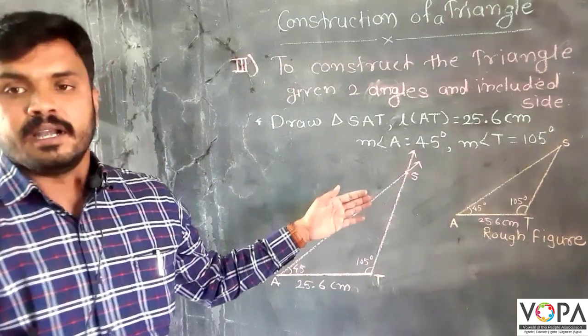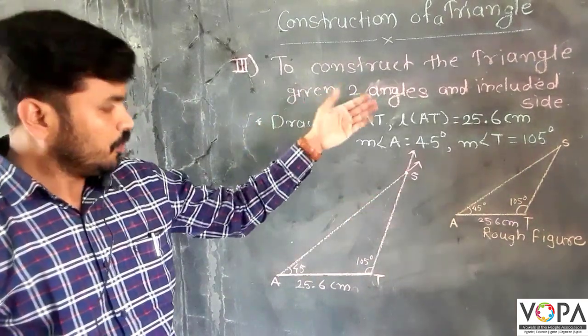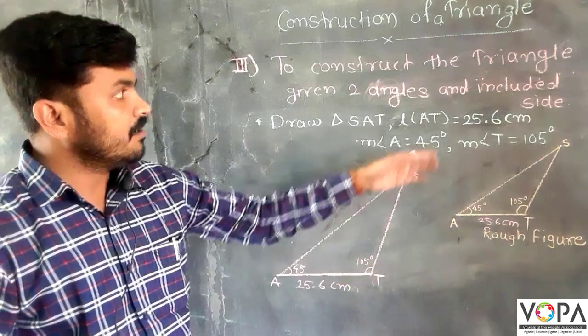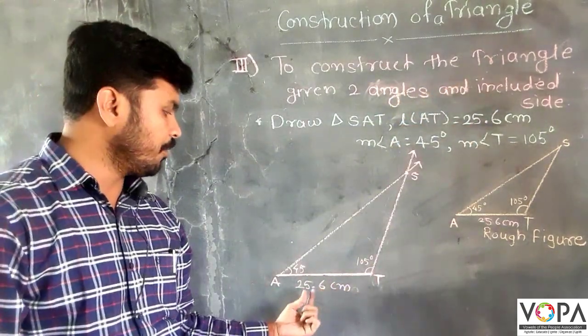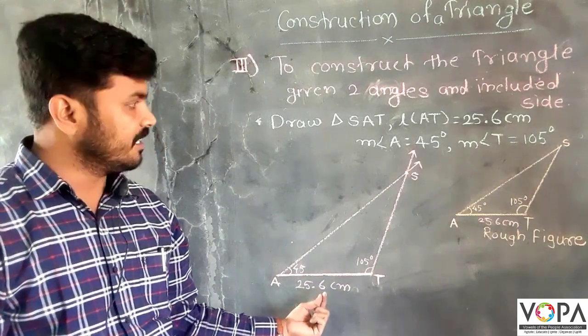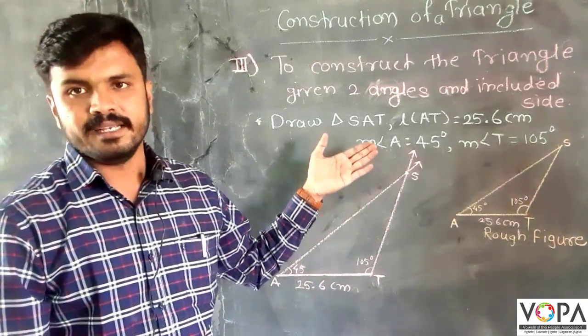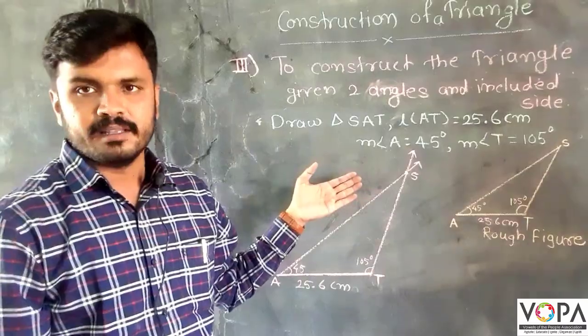This is your triangle constructed with the given two angles, angle A and angle T, and one included side, which is side AT equal to 25.6 centimeters. Please solve the examples from the practice set. Thank you.